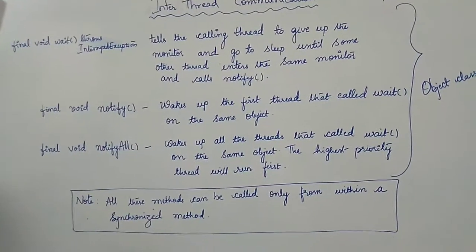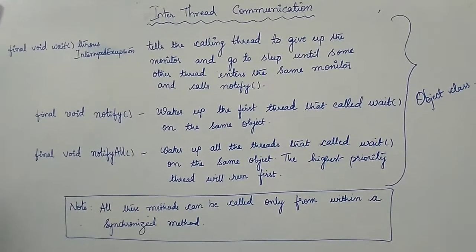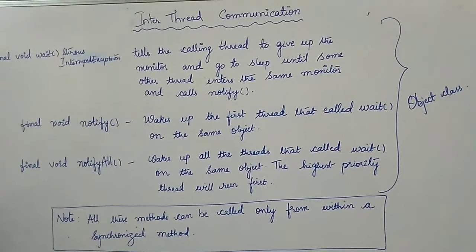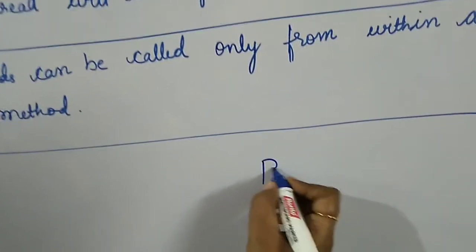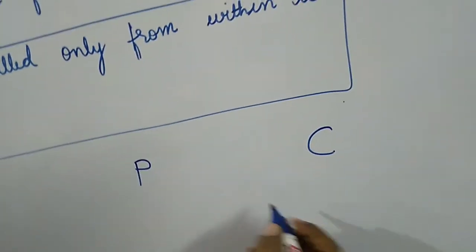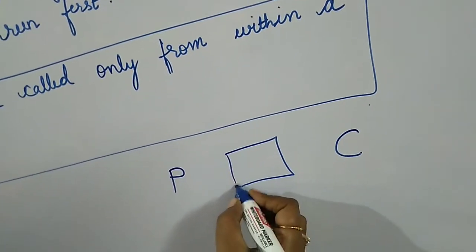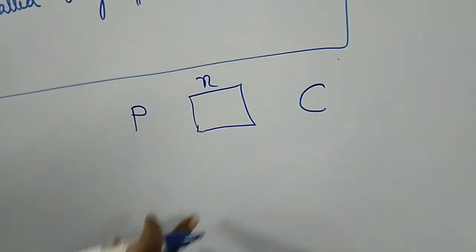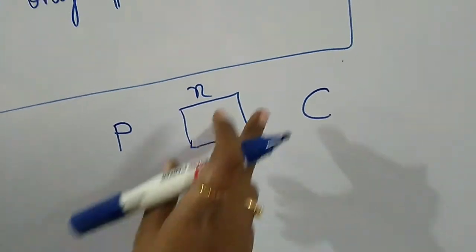Hello friends, welcome back. Today we will see inter-thread communication. To understand inter-thread communication, let us look into a particular example. Say there are two threads: the first thread is called the producer thread and the other thread is called the consumer thread, and these producer and consumer threads are sharing a resource. Say this resource is a variable n.